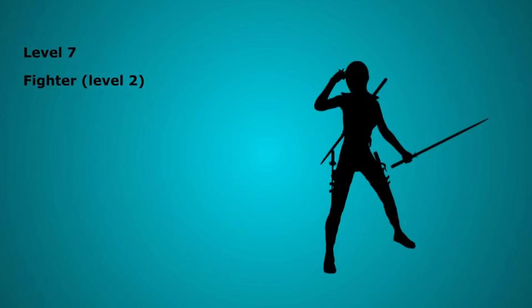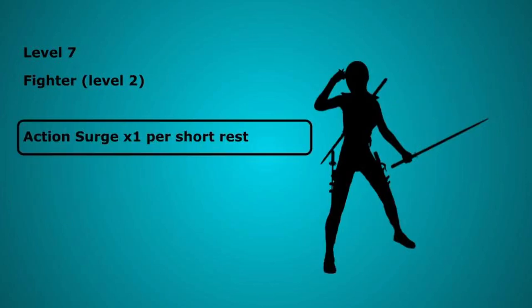Level 7 we take our second level on Fighter gaining us the Action Surge feature. Once per short rest you can take 1 additional action on your turn. This can make you swing your Blades of Chaos a total of 5 times in 1 round by using 2 attack actions and 1 bonus action. At your current ability scores and level that would average around 48 damage.